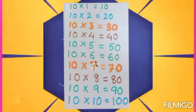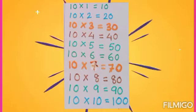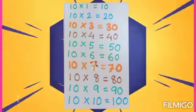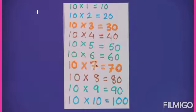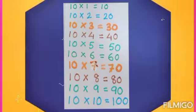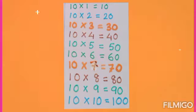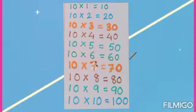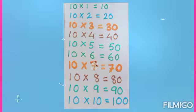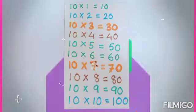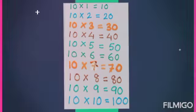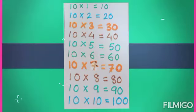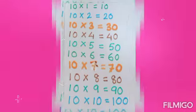10 times 1 is 10. 10 times 2 is 20. 10 times 3 is 30. 10 times 4 is 40. 10 times 5 is 50. 10 times 6 is 60. 10 times 7 is 70. 10 times 8 is 80. 10 times 9 is 90. 10 times 10 is 100.